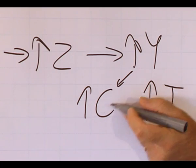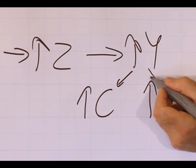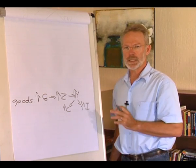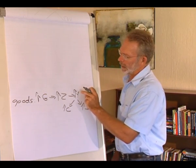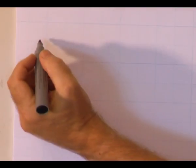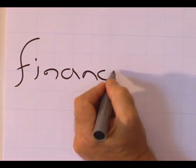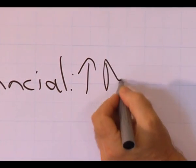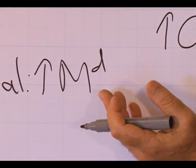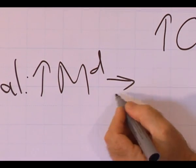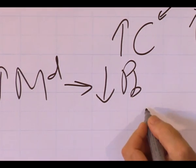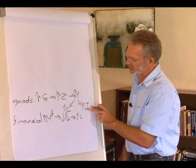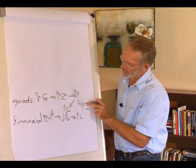The increase in level of output does not only affect private consumption expenditure and level of investment — there's also a spillover to the financial sector. The increase in level of output also affects the financial market. The increase in level of output leads to an increase in demand for money. We have an excess demand for money in the financial market, therefore we sell bonds. The price of bonds decreases and the interest rate increases.